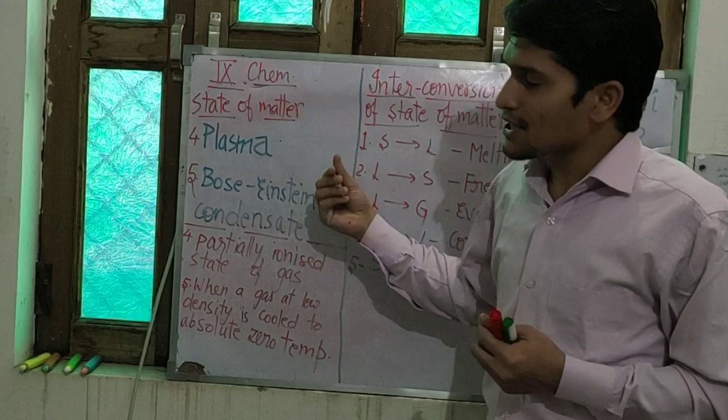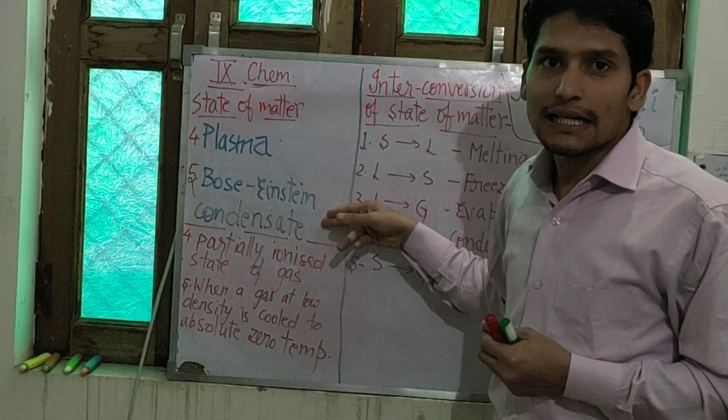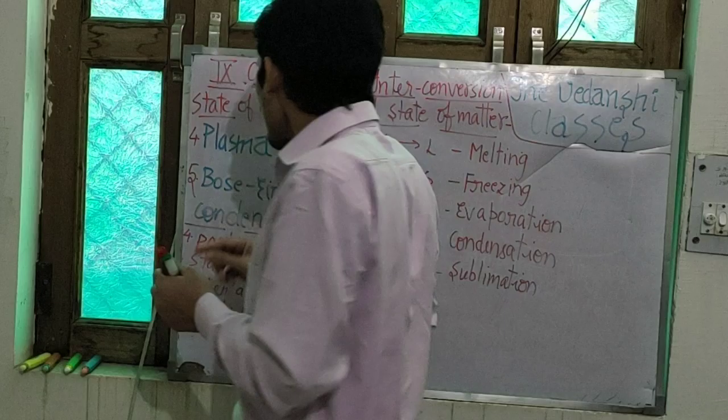So apart from solid, liquid and gas, there are 2 more states of matter: plasma and Bose-Einstein condensate. You have to only know the names of these states of matter.